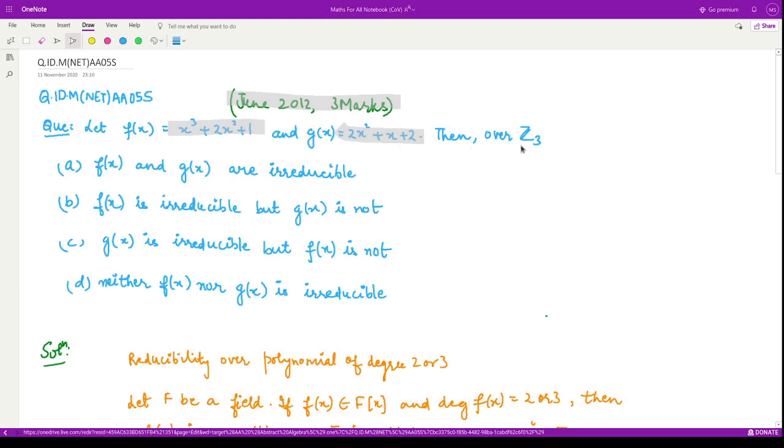Then over Z₃, which is a finite field, they are asking what is the nature of these polynomials - are they irreducible or not. Out of these four options, we need to suggest one correct option. So, let us see the behavior of this polynomial f(x) and this polynomial g(x).